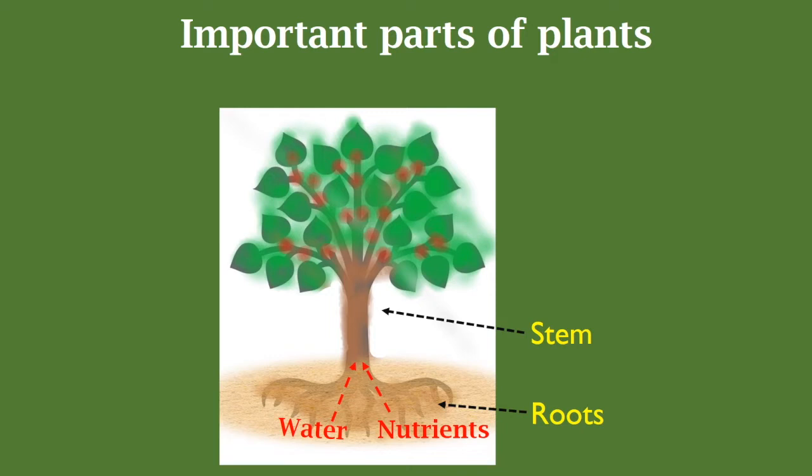The third part is leaves. With the help of water, carbon dioxide in air, and sunlight, leaves prepare food for the plants. This process is called photosynthesis.